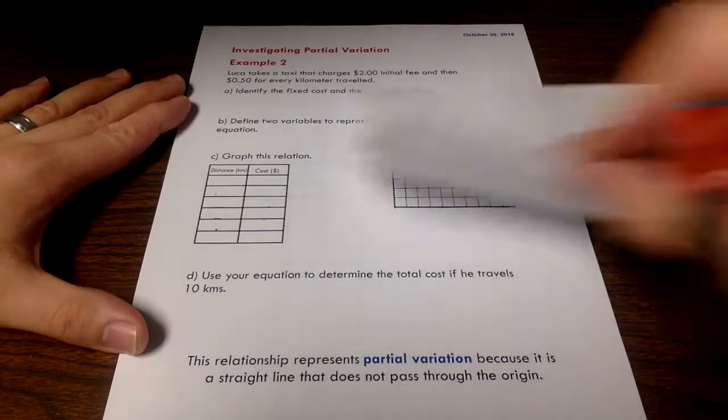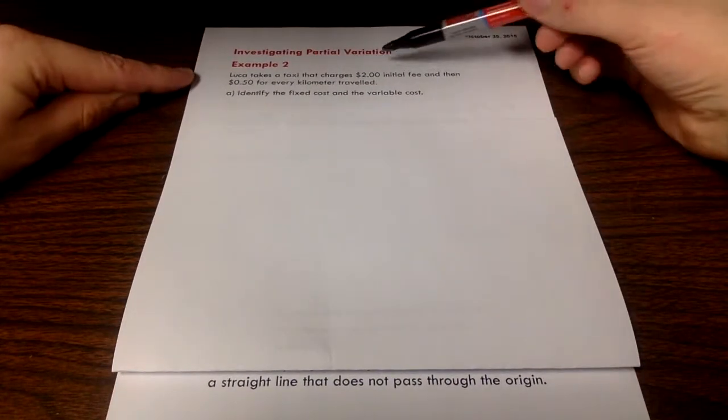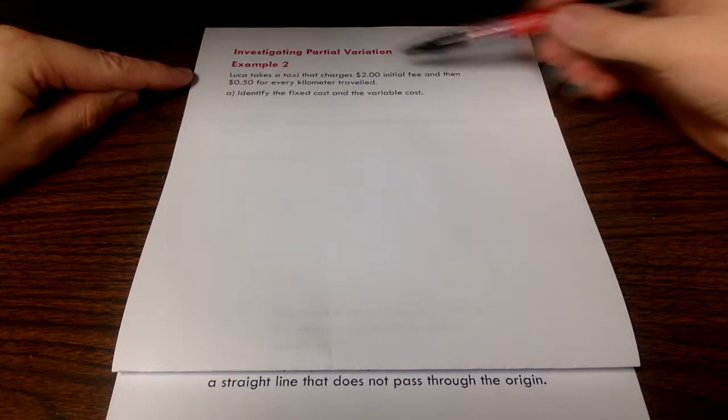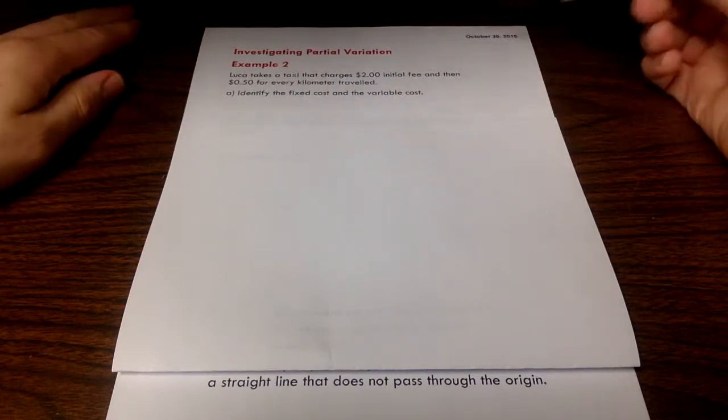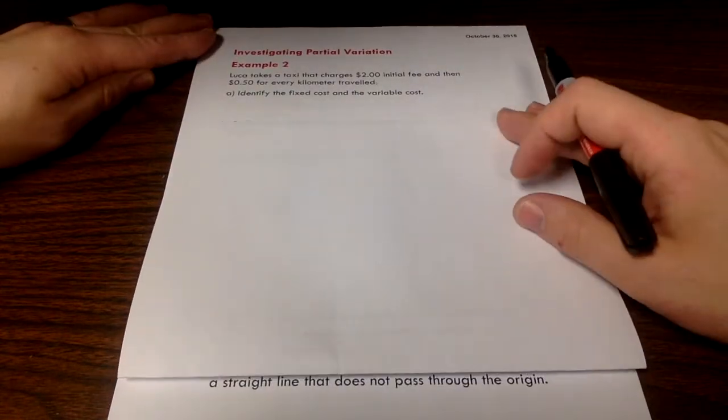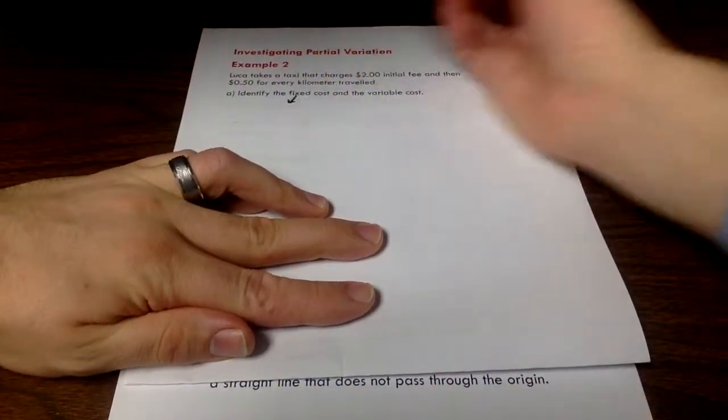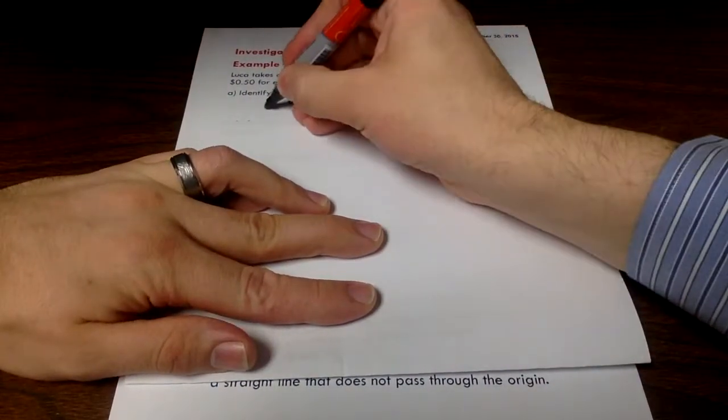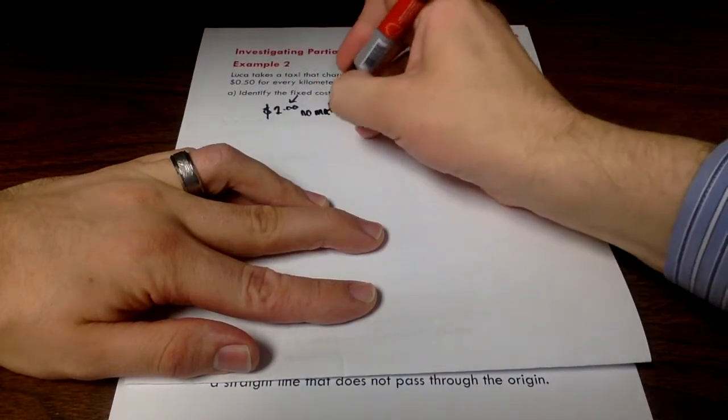We're going to look at something called partial variation. This one's a little bit different than the last example. We had this guy taking a taxi that's charging $2 initially, regardless of how many kilometers driven, and then we've got this 50 cent increase in price for every kilometer traveled. Let's look at this scenario and identify the fixed cost and the variable cost. Fixed cost just means what am I being charged regardless? In this situation, it's a $2 charge regardless. That's no matter what, this is how much we're paying.